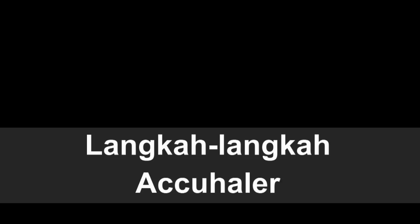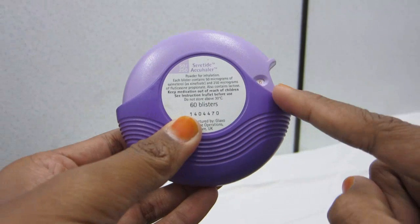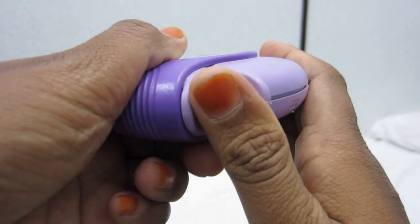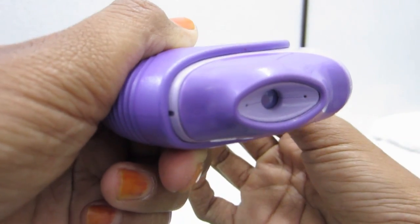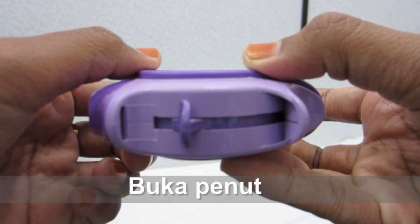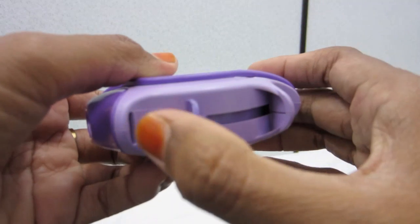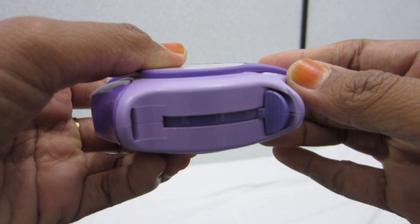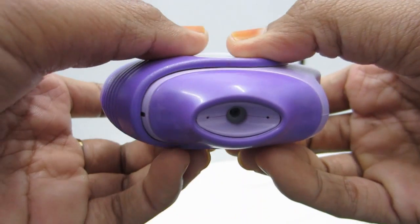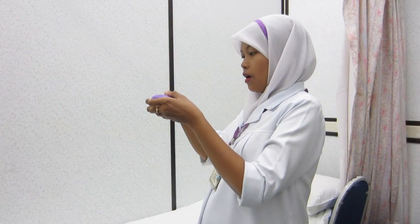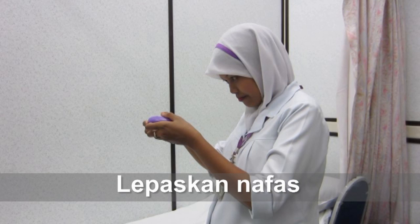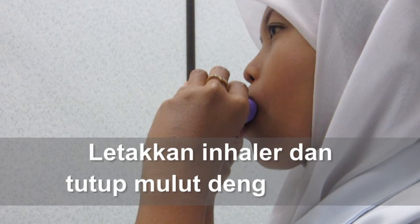Berikut adalah langkah-langkah penggunaan Accuhaler. Periksa dos kaunter pada inhaler. Buka penutup sehingga bunyi klik. Tarik butang juga sehingga bunyi klik. Lepaskan nafas dahulu. Letakkan inhaler pada mulut.